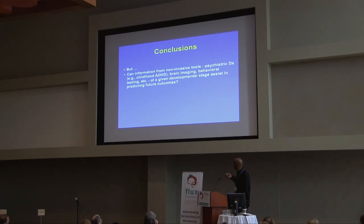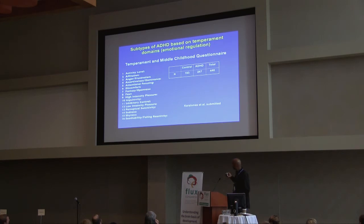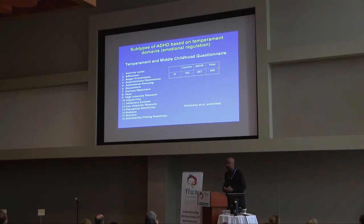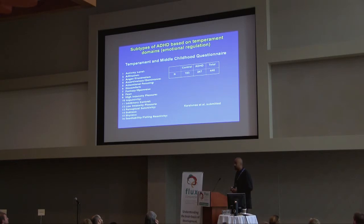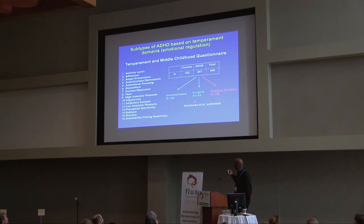Back to the original question: can information from non-invasive tools like brain imaging and behavioral assessments, at a given developmental stage, assist in predicting future outcomes? As a follow-up on this work, a postdoc in Joel Nigg's lab — a clinical psychologist — decided to take this up by using more clinically applicable measures, things you can apply right in the clinic. She took the Temperament in Middle Childhood Questionnaire developed by Mary Rothbart, based just south of us in Eugene, to look at temperament styles and see if they exist in these populations and how they might be informative towards ADHD. When she applied this to the ADHD group, she found three different groups: an uncomplicated group, a surgent group, and a negative emotional group.